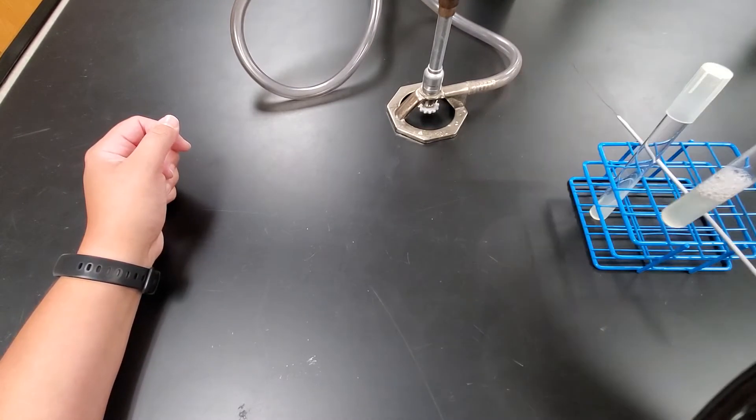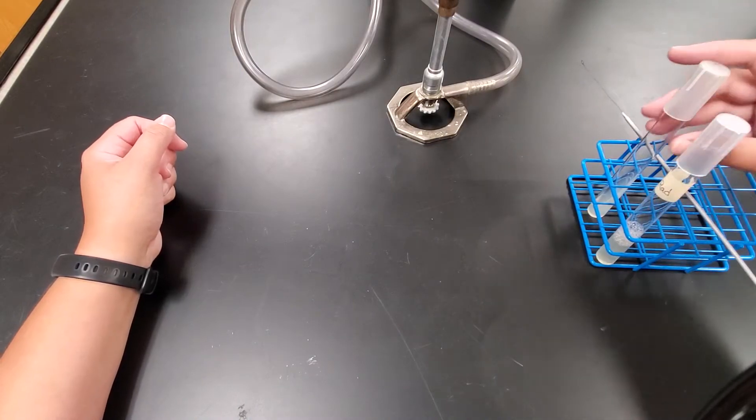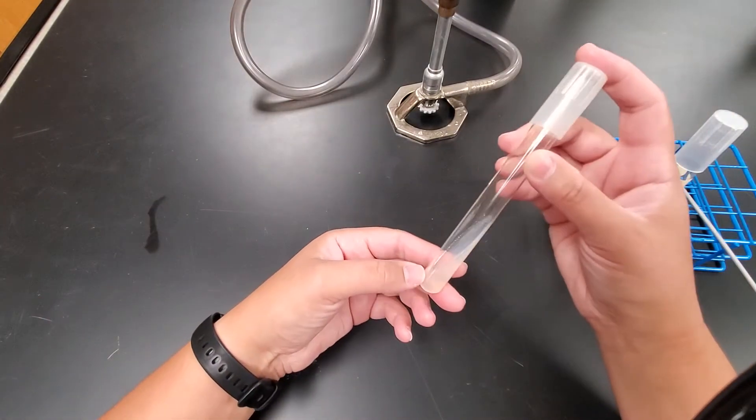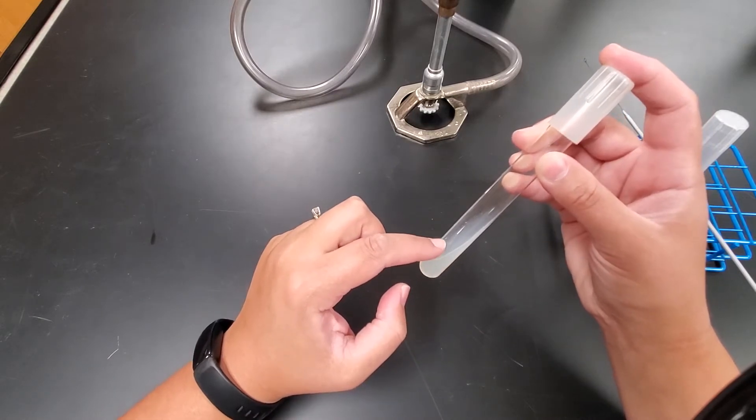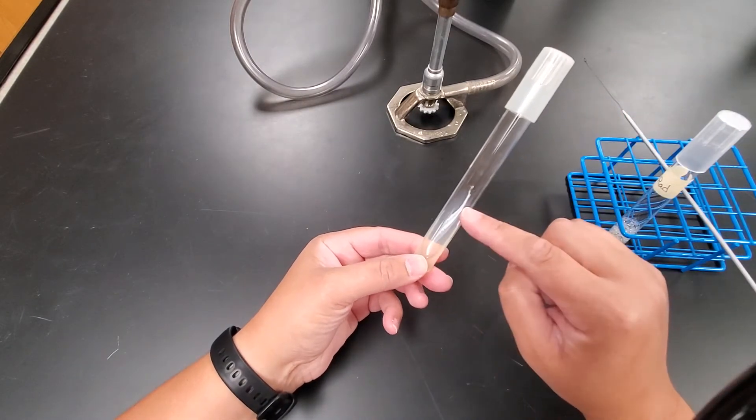So once that's suspended, we can then do an aseptic transfer. Whenever we do a transfer to an agar slant, we're going to start at the bottom and zigzag our way up with that sample up to the top.